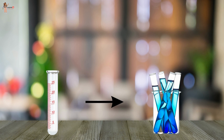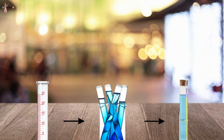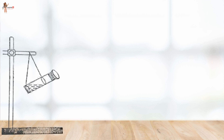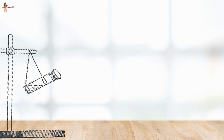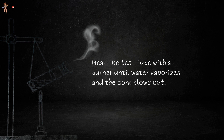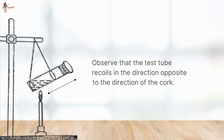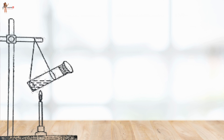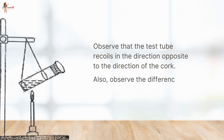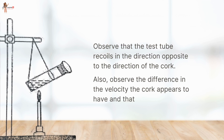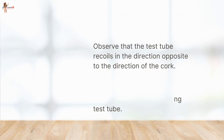Activity: Take a test tube of good quality glass and put a small amount of water in it. Place a stopcock at the mouth. Suspend the test tube horizontally by two strings or wires. Heat the test tube with a burner until water vaporizes and the cork blows out. Observe that the test tube recoils in the direction opposite to that of the cork. Also observe the difference in velocity between the cork and the recoiling test tube.